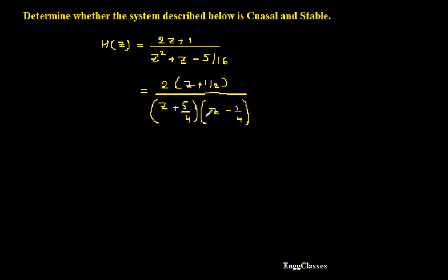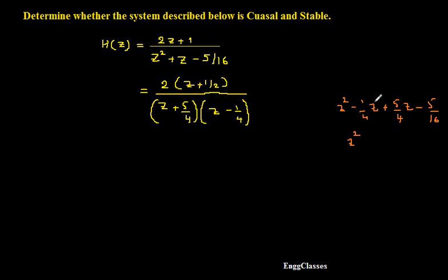To verify the factorization is correct, if I multiply the two denominator factors I should get back the original Z² + Z - 5/6. Expanding: Z·Z = Z², then Z·(-1/4) = -1/4 Z, then 5/4·Z = 5/4 Z, and 5/4·(-1/4) = -5/16. Adding the Z terms with LCM 4 gives (-1+5)/4 = +1, so we get Z² + Z - 5/16. Yes, this is correct — the factorization is verified.